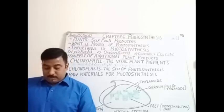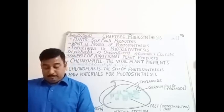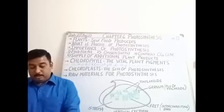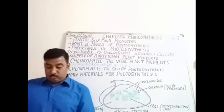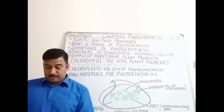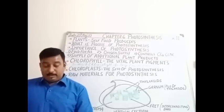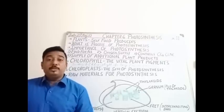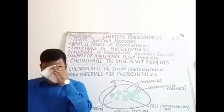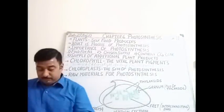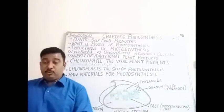Photosynthesis is the process by which living plant cells containing chlorophyll produce food substances from carbon dioxide and water by using light energy. That is the definition of photosynthesis.